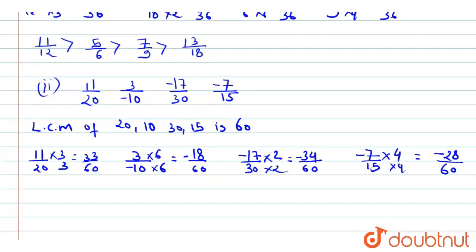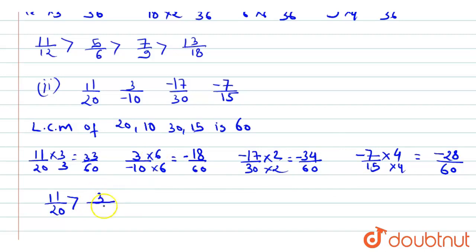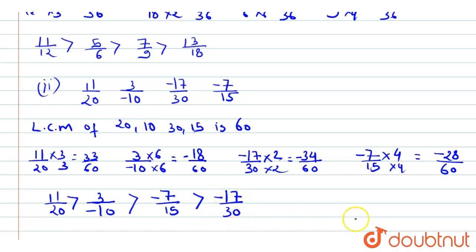Arranging in descending order: descending order means we write the greatest first, then the smallest. For negative numbers, the one with the smaller absolute value is actually greater. So the order is: -11/20 > -3/10 > -7/15 > -17/30.